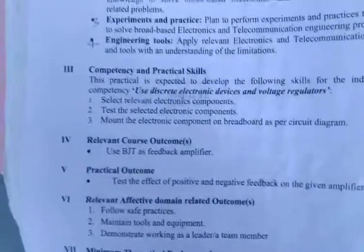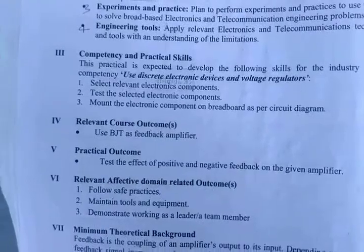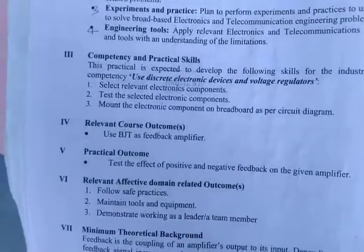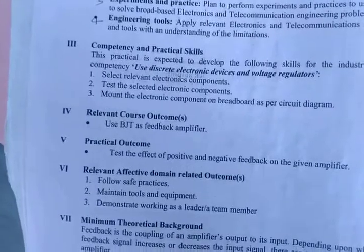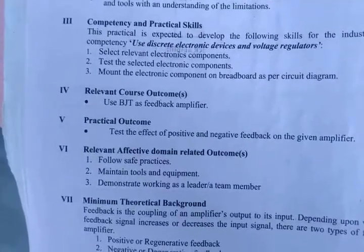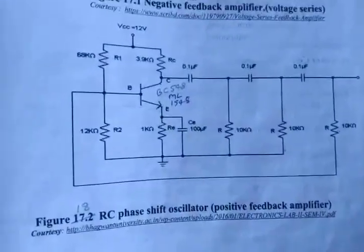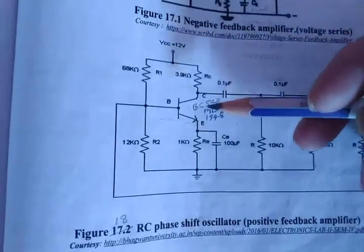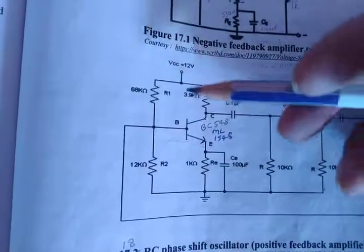The competency expected is to use discrete electronic devices and voltage regulators. The course outcome is to use BJT as a feedback amplifier, and the practical outcome is to test the effect of the positive feedback amplifier.